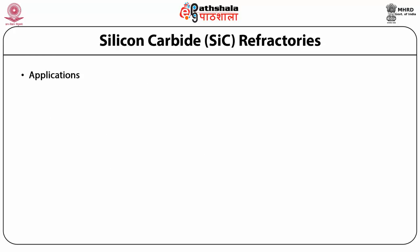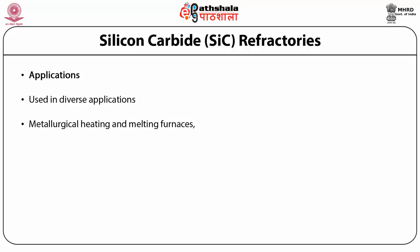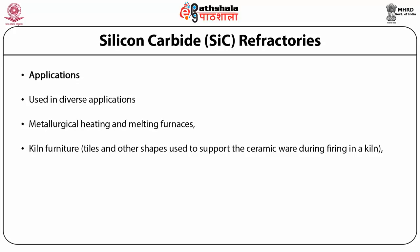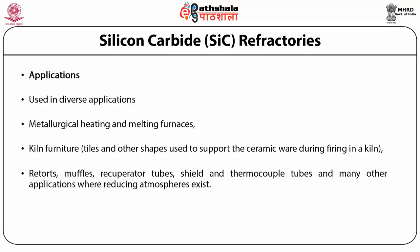Because of their properties, silicon carbide refractories are used in diverse applications such as metallurgical heating and melting furnaces, kiln furniture including tiles and other shapes used to support ceramic ware during firing, retorts, muffles, recuperator tubes, shields and thermocouple tubes, particularly where reducing atmospheres exist.